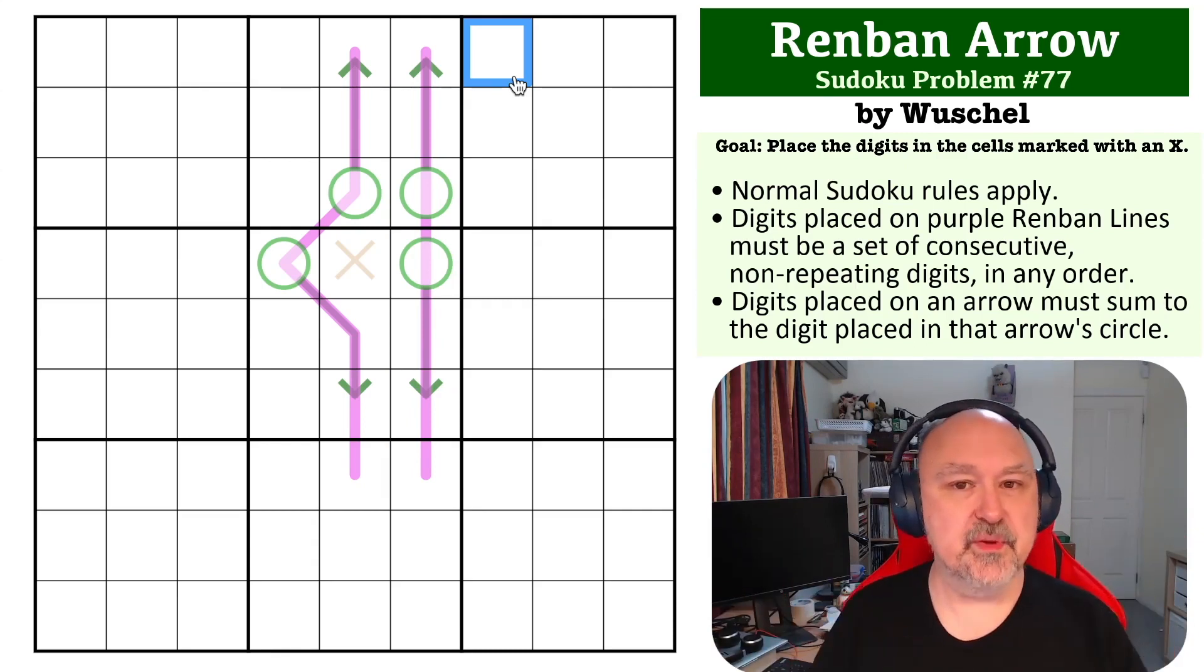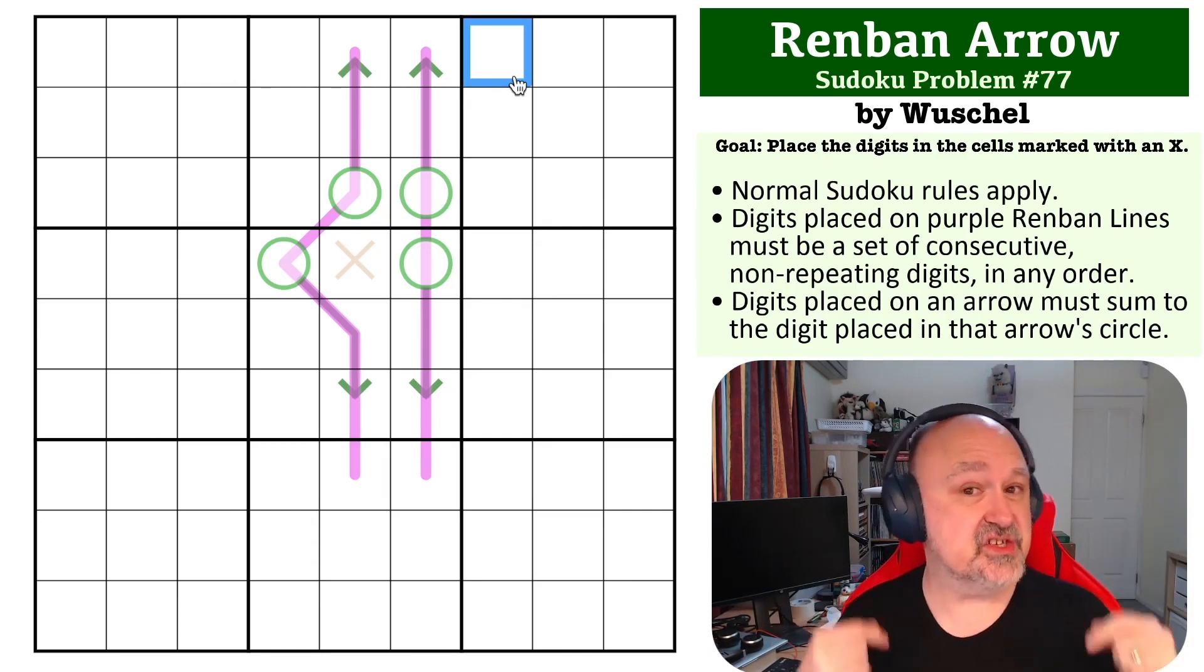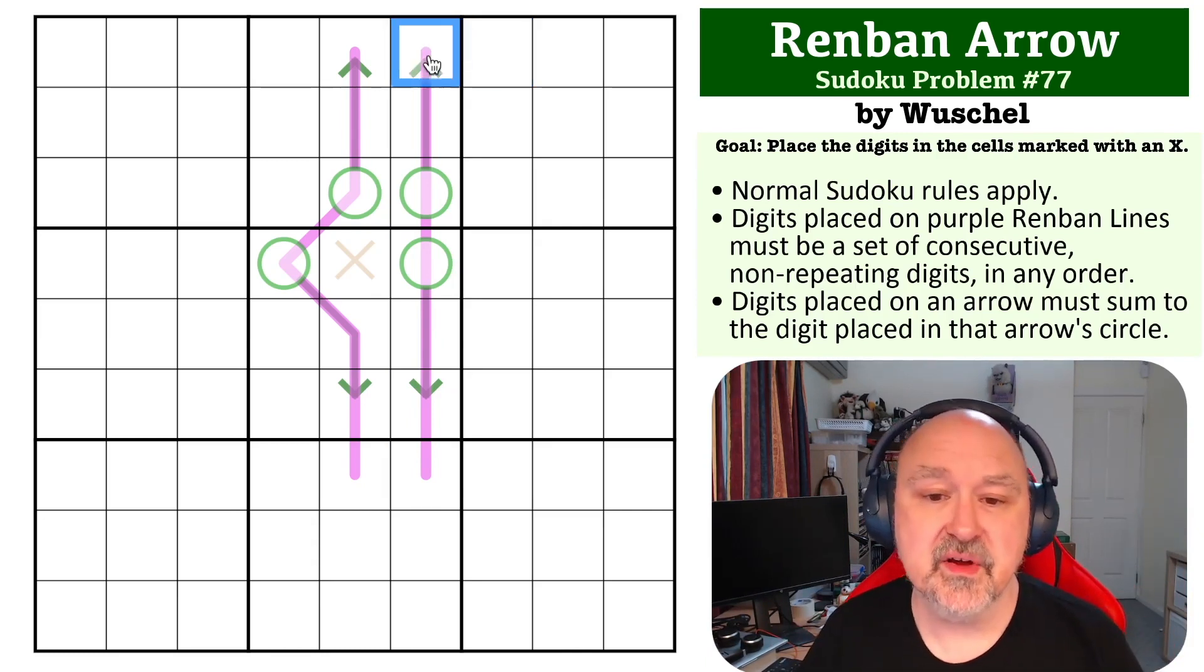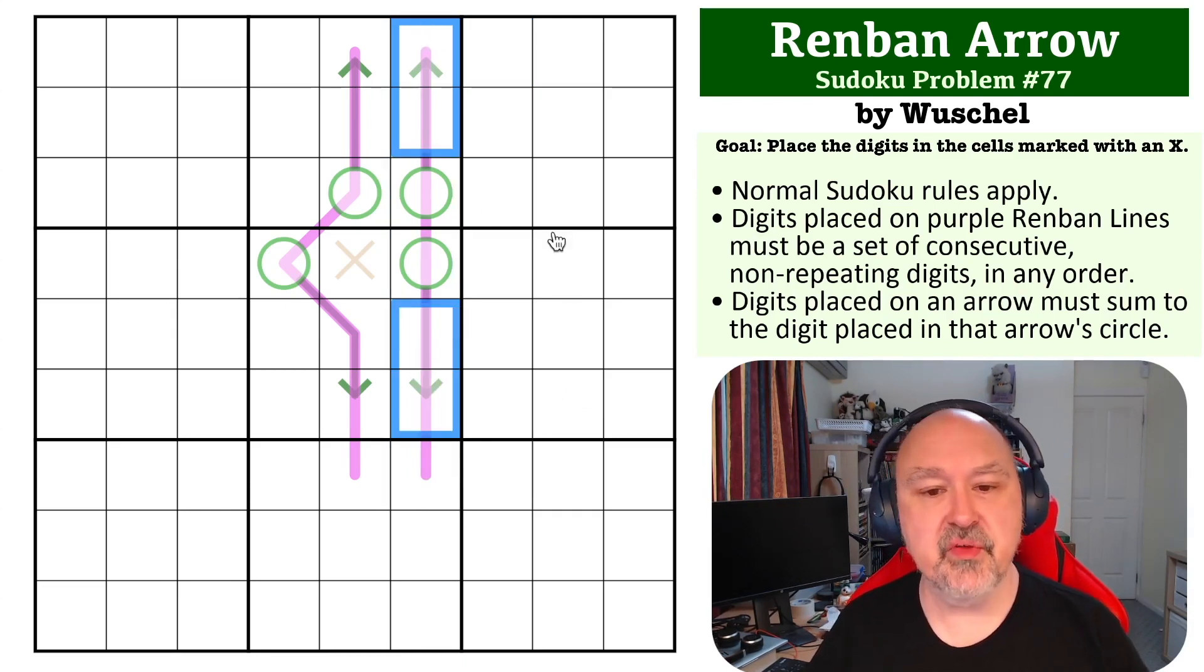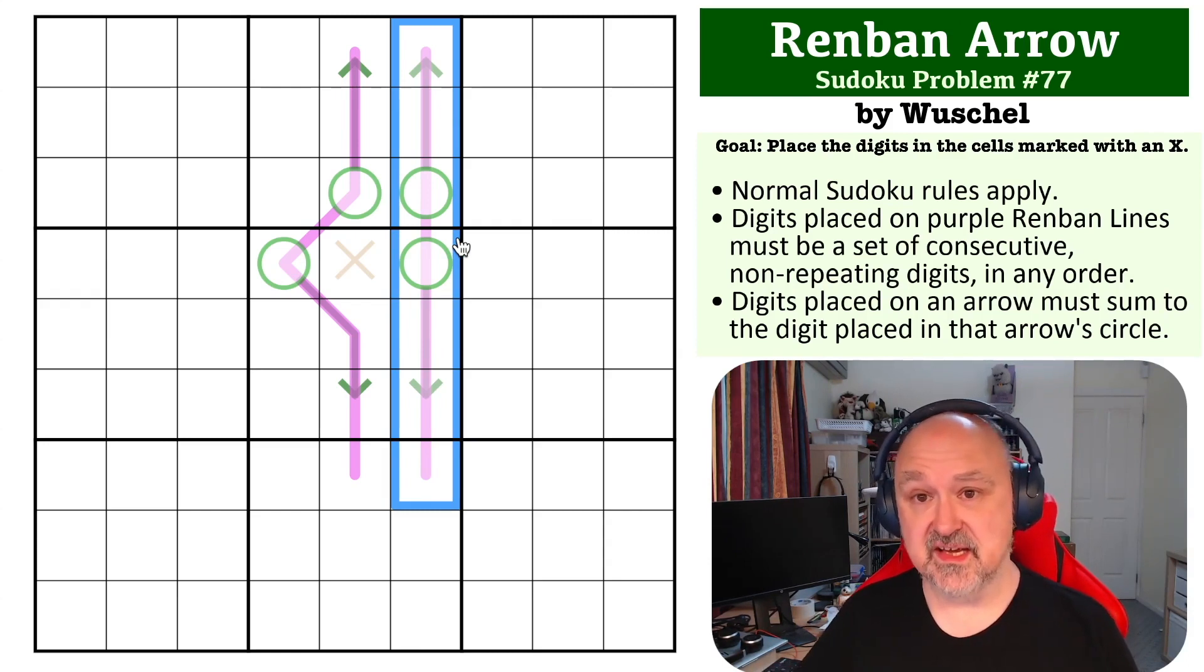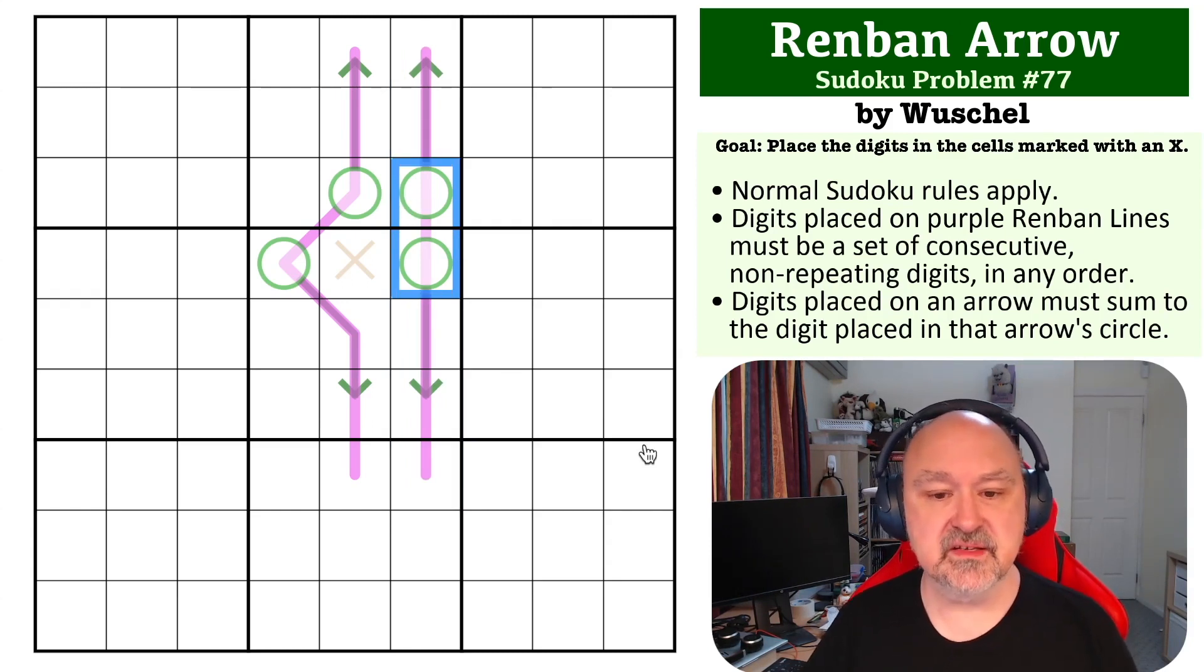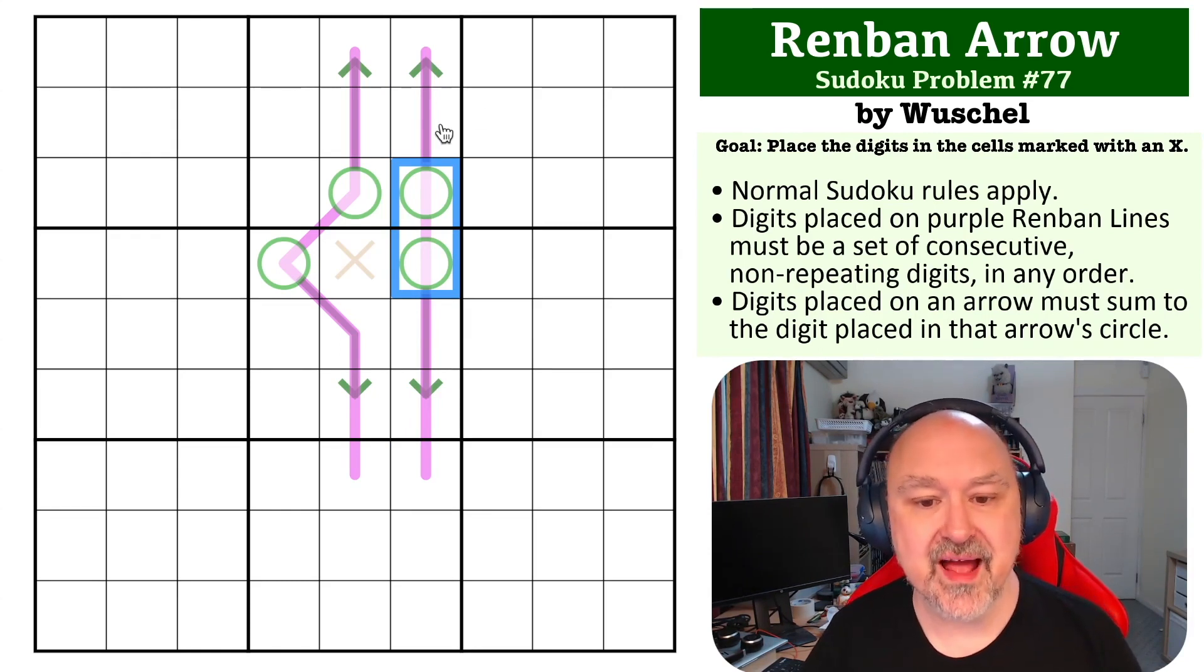Now what happens - the big question is can it contain the digits three through nine? And the answer is it can't. Because if these contain the digits three through nine, what are you going to put on these arrows? The minimum digits you could put on those arrows, if it's three through nine, is three, four, five, and six, because you don't have one and two available. So three, four, five, and six - if you add them together, five and six is eleven, three and four is seven, add those together you get 18. And these two arrows would have to sum to 18, which would mean double nine, and you can't do that. So this cannot have a nine on this renban line.